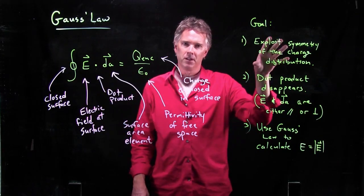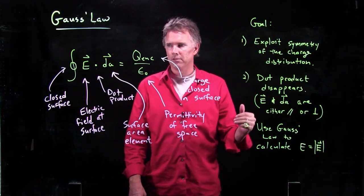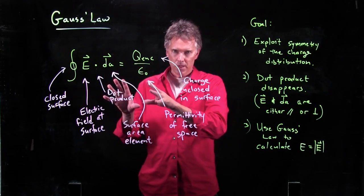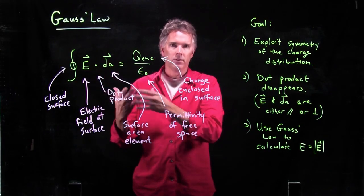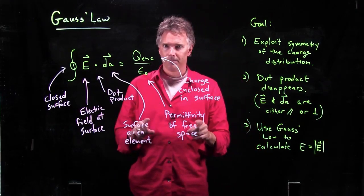And when we do a couple examples, you'll see exactly what I mean by that. So, this is sort of the goal of Gauss's law: use symmetry to simplify this equation such that you can calculate an E field in magnitude.